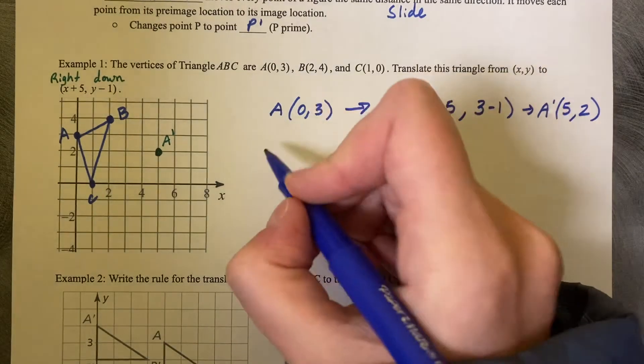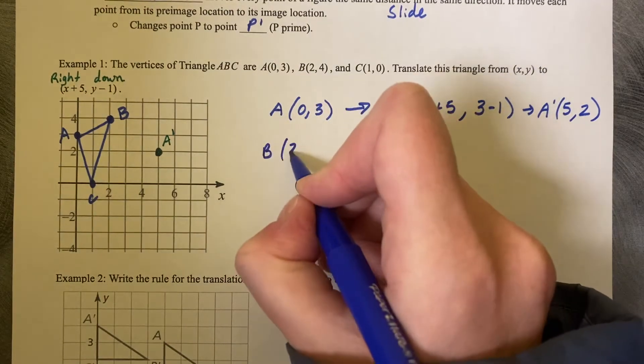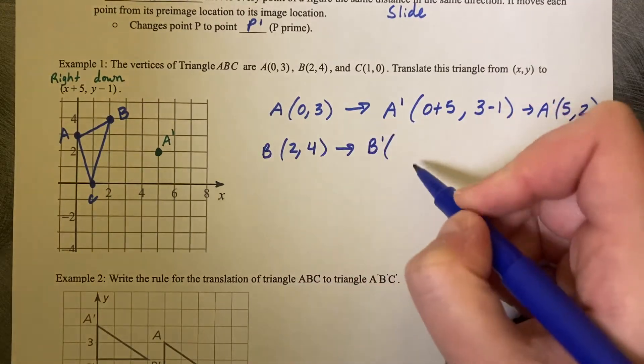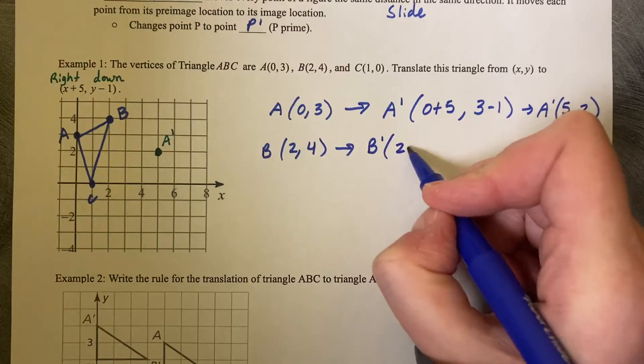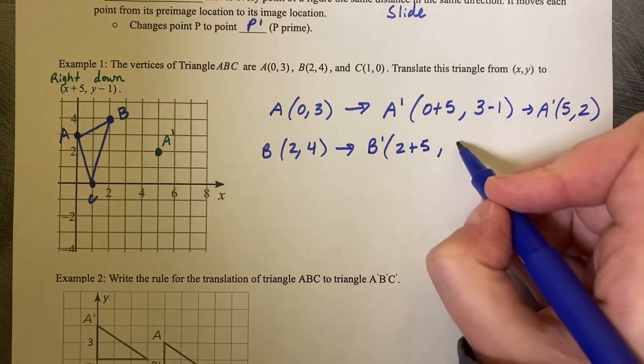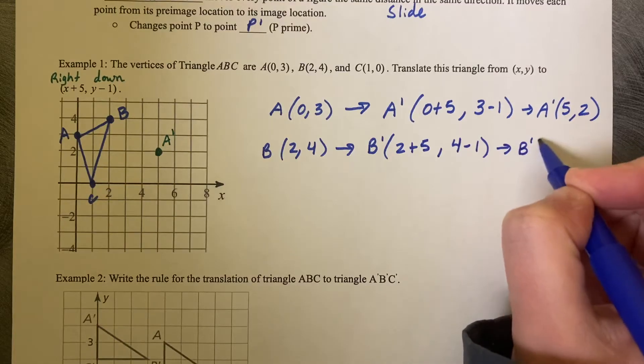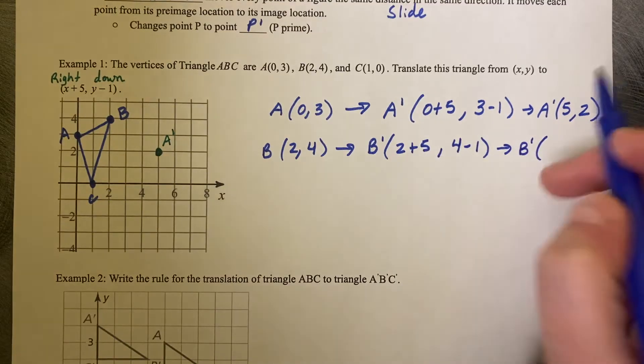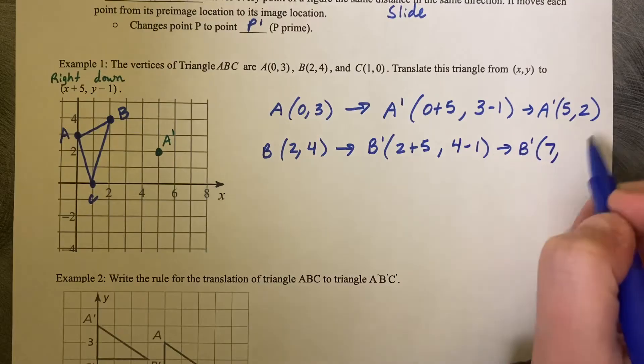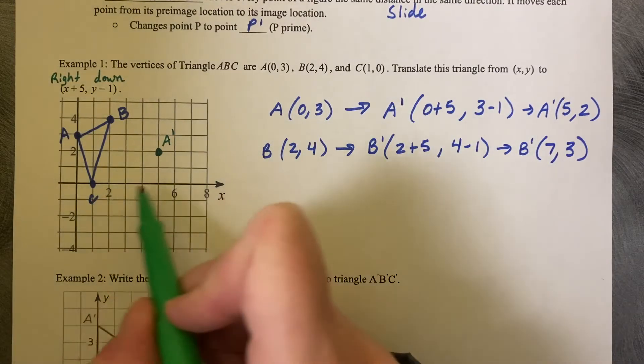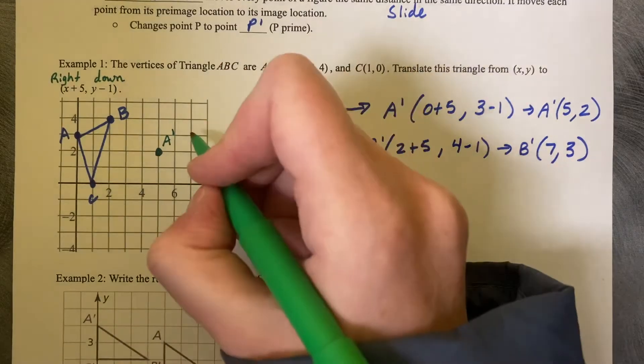Same thing with our B value, so our B value is at (2,4). So B prime is going to be at 2 plus 5 and then 4 minus 1. So where is B prime? 5, 6, 7. 4 minus 1 is 3. So B prime should be at (7,3).